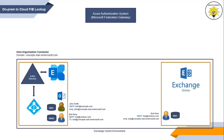An intra-organization connector is created if you have Exchange Server 2013, 2016, or 2019. If there is no intra-organization connector, the availability service will look for an organization relationship configured with domain name concepts.mail.onmicrosoft.com. If neither an intra-organization connector nor an organization relationship exists, availability service will look for availability address space, which has a domain name set to domain.mail.onmicrosoft.com and is used for free busy lookups when no organization relationship or intra-organization connector is present.